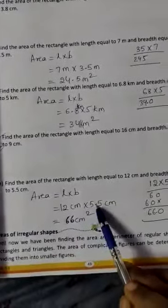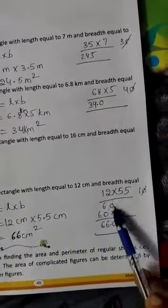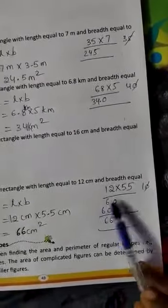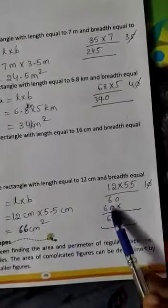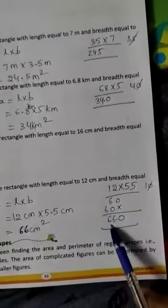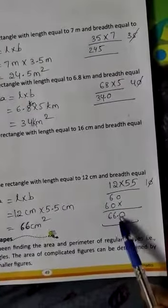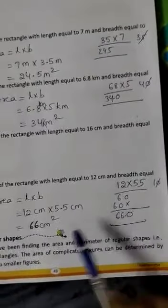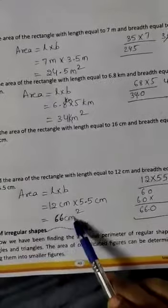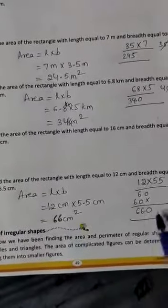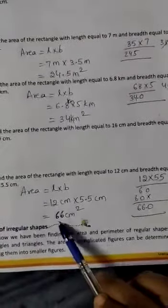Remove the point: 12 × 55. 5 twos are 10, 5 ones are 5, 5 plus 1 is 6 — giving 60. Then 5 tens are 60. So 660. Therefore the answer is 66.0, which is 66 centimeter square.